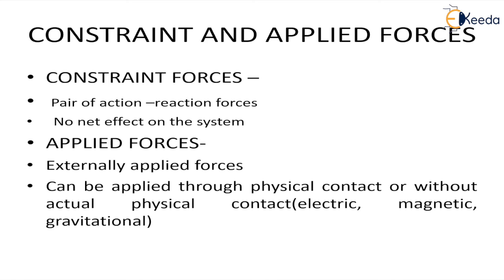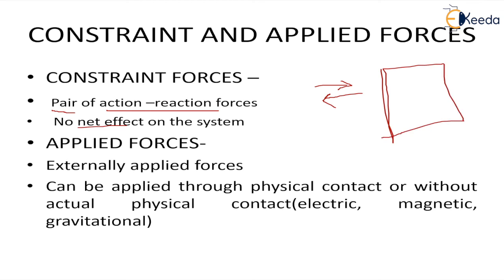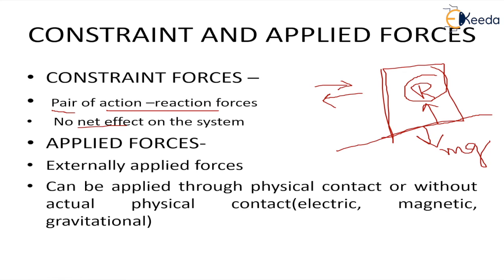There are two terms we will be using continuously: constraint forces and applied forces. Constraint forces are action-reaction pairs. For example, when you are walking on the floor, the action is your force and the reaction is the friction applied by the ground. These forces always exist in pairs and are equal and opposite, so their net effect is zero. However, if we isolate the system and consider only one single force, these forces do come into play and help in force analysis.